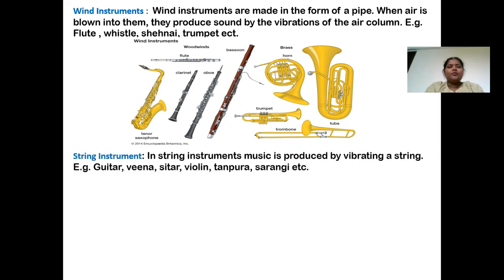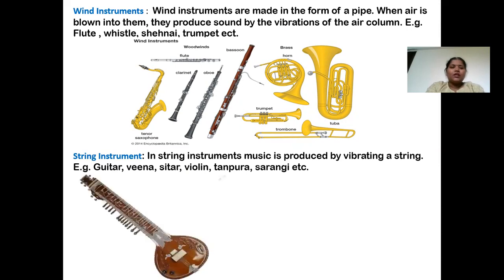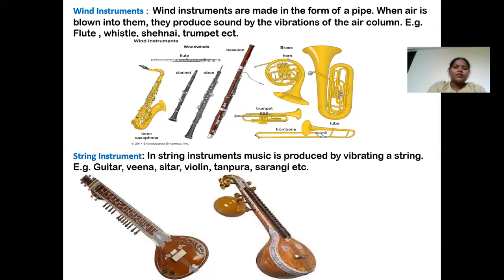The next type is string instruments. In string instruments, music is produced by vibrating a string. If you observe the structure of guitar, veena, sitar, tanpura, sarangi — those all are known as string instruments. The wire strings are fixed on those instruments and the artist has to pluck those strings in a particular order, and a melodious sound is created.